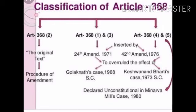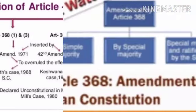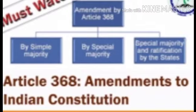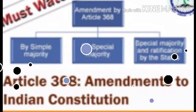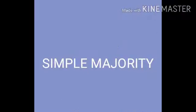An important example is the Kesavananda Bharati case of 1973, which introduced the concept of the basic structure of the Indian Constitution. From that case we came to know that there is something called the basic structure which cannot be amended. Under Article 368, three procedures for amendment are given.